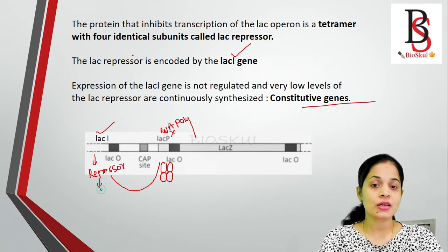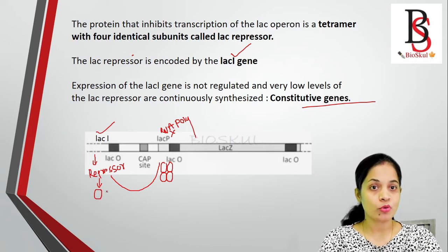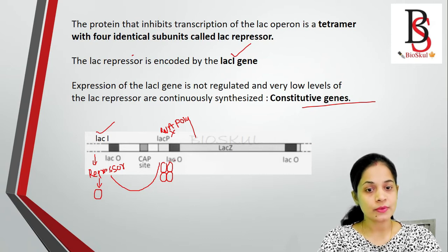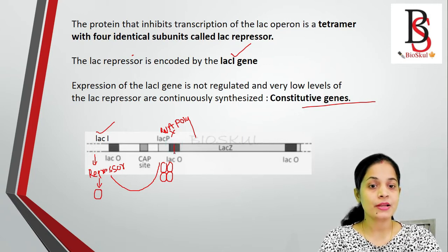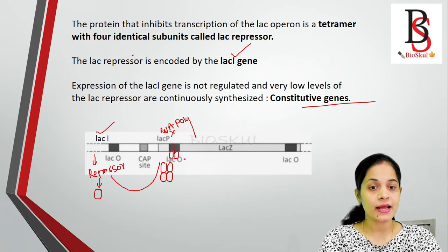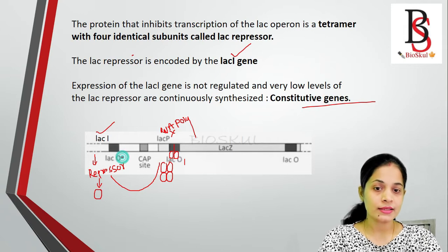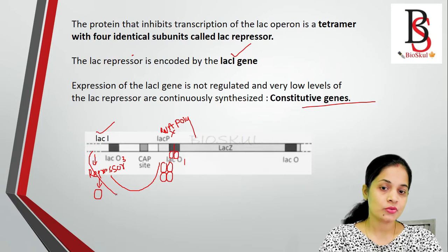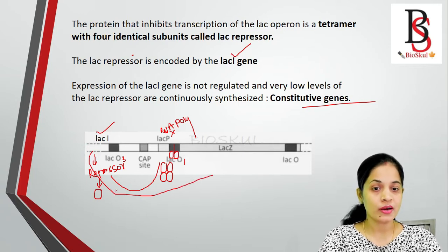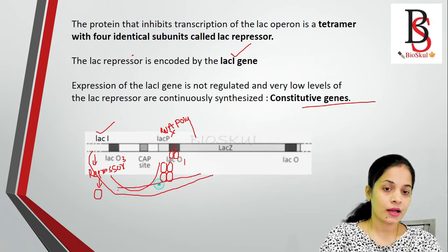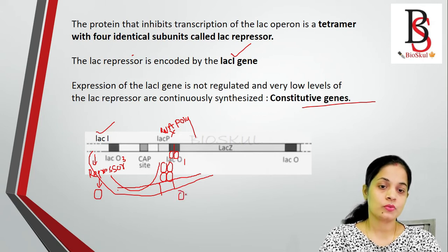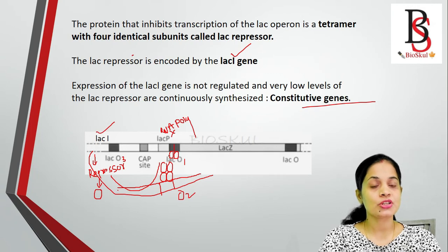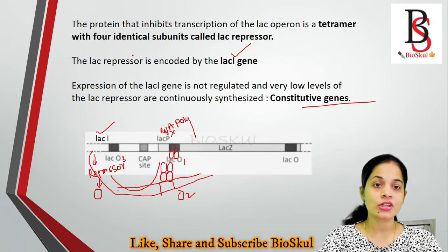The repressor protein is synthesized as a monomer, and these monomers then form a tetramer. This tetramer binds to the lac operator. As discussed in the previous session, the lac operator has two half-sites containing palindromic sequences where the dimer form of the repressor binds. This is the primary operator, operator 1. There are also secondary operators — two subunits of the repressor molecule bind to operator 1 and another two bind to operator 2. When the repressor binds the operator, RNA polymerase cannot bind to the promoter, thereby inhibiting transcription.